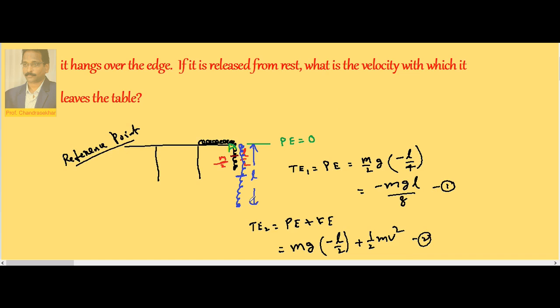First, chain is at rest, so total energy is potential energy: minus m by 2 into g, because hanging part mass is m by 2, and center of mass distance from A is minus l by 4. Once the chain starts falling, it will have both potential and kinetic energy.